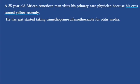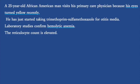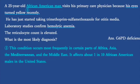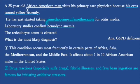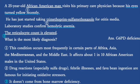A 25-year-old African male visits his primary care physician because his eyes turned yellow recently. He has just started taking trimethoprim-sulfamethoxazole for otitis media. Laboratory studies confirm hemolytic anemia and the reticulocyte count is elevated. The answer is G6PD deficiency. This condition occurs most frequently in certain parts of Africa, Asia, the Mediterranean, and the Middle East. Drug reactions are known for initiating oxidative stress.